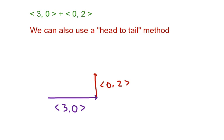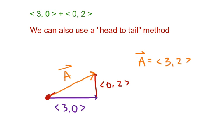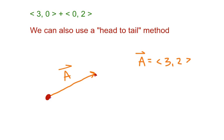With the head-to-tail method you don't have to make a parallelogram, which is why I like this method. You just begin at your starting point and draw from that point to where you end — that is your resultant vector. Here again, if we take off the pieces we started with, we have a vector that is over 3 and up 2, the same vector. That's the head-to-tail method.